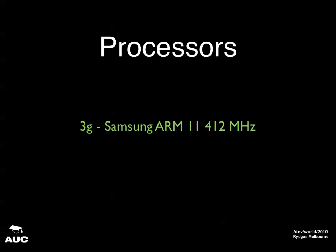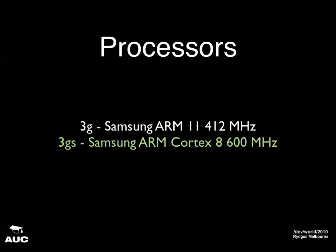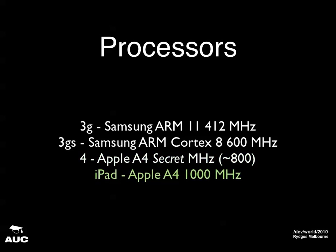iPhone and iPad work on the ARM processor scheme — it's not the same as x86. For the most part it doesn't matter what the processor is, but you need to know how fast they go. The 3G uses the Samsung ARM11 running at 412 MHz. The 3GS uses the Cortex. The iPhone 4 uses the Apple A4, which runs significantly faster on certain tasks. The iPad also uses the A4 at a higher clock rate.